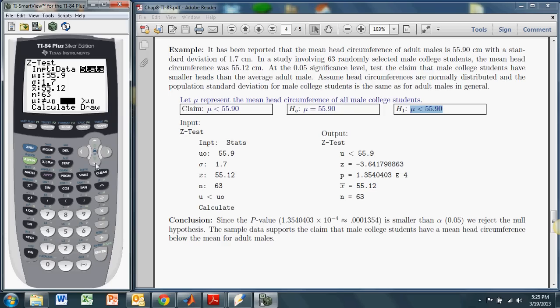Go down to calculate and have it do the work for us. And the first thing it spits out, it repeats basically the alternate hypothesis here. It's repeating that we're claiming the mean is less than 55.9. So that's good.